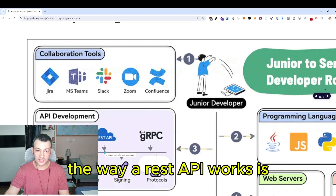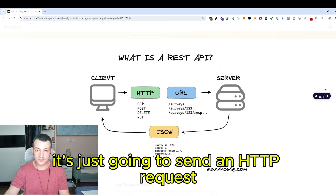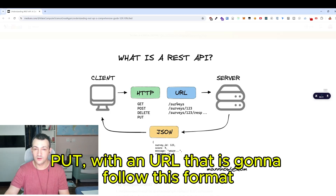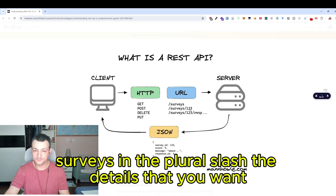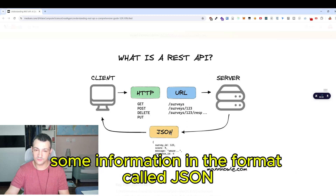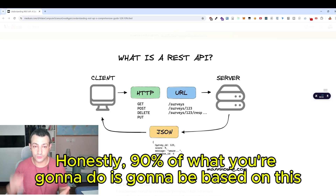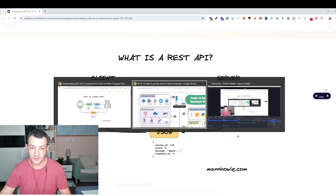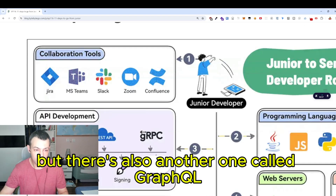The way a REST API works is that it sends an HTTP request — either GET, POST, DELETE, or PUT — with a URL that follows a specific format. For example, 'surveys' in the plural, slash the details you want, and the server is going to send back information in the format called JSON. Honestly, 90% of what you're going to do is going to be based on this pattern.